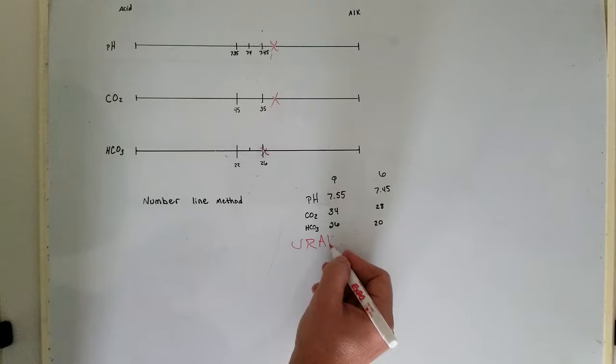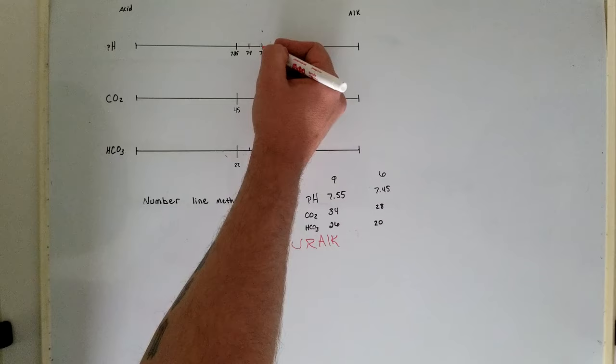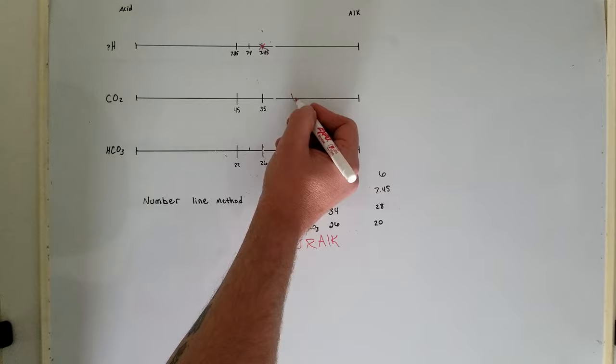It works for the other problems as well. I didn't notice that this was dead-on when I picked it, so there might be some debate about this. But 7.45 is in the normal range, CO2 is 28, so that's pretty well down here on the alkaline side.